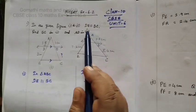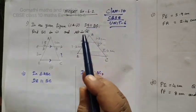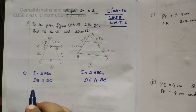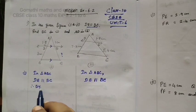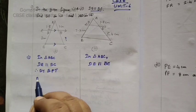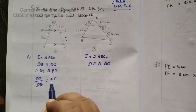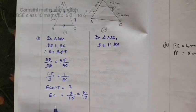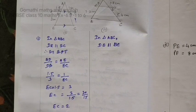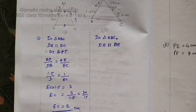EC equal to question mark. It is given parallel. Parallel means immediately you can apply basic proportionality theorem. Therefore, by BPT, AD by DB equal to AE by EC. 1.5 by 3 equal to 1 by EC. So EC equal to 2 centimeters.